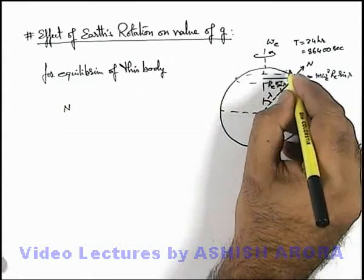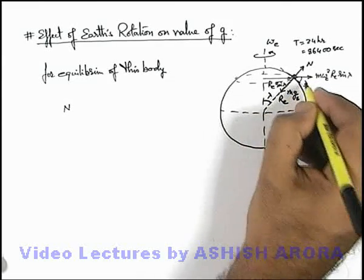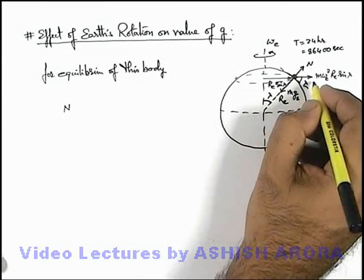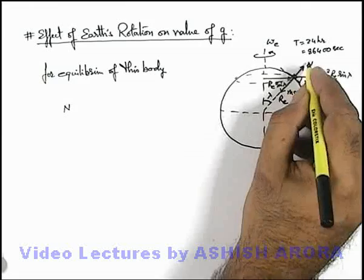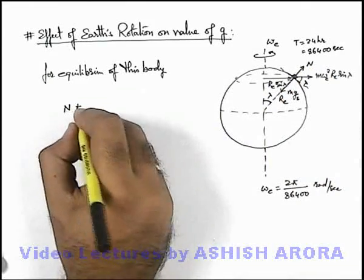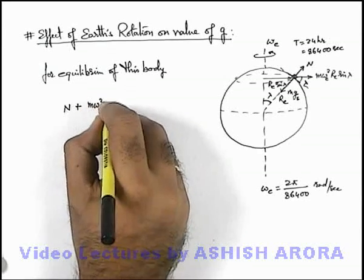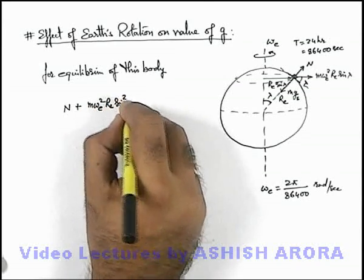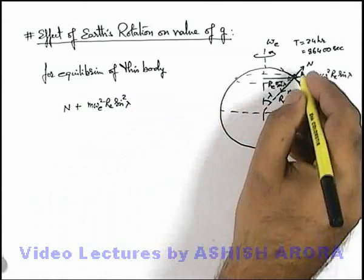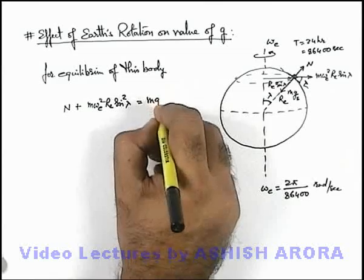In this situation if this angle is λ, we can simply write that this angle will also be λ geometrically. So along the direction of normal reaction we can write there is a component of this centrifugal force that is m ω_e² r_e sin² λ, and that'll be balanced by the weight of body at this point which is m g_s.